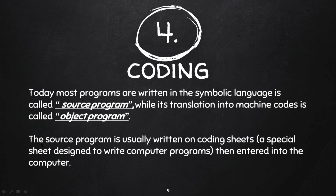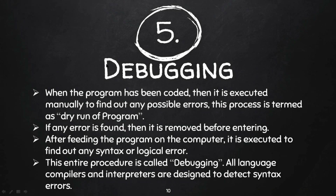The source program is usually written in coding software. For QBasic there is QB64 or QB 1.0; for C programming there is Code::Blocks; for C++ also Code::Blocks, or Turbo C++. We write the program in that software and click the run button to convert it for the computer. After writing a code, we have to check whether there is some error or not. Debugging is the process of checking whether the program gives correct output without any error. When the program has been coded, it is manually executed step by step to find possible errors.